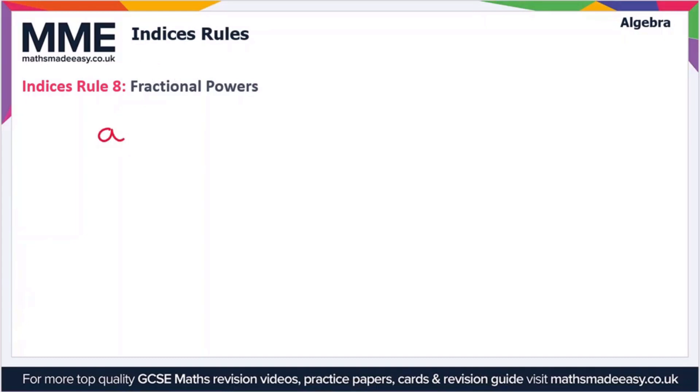This is where we have a to the power m over n, where m over n is obviously a fraction. So this is equal to the nth root of a to the power of m.